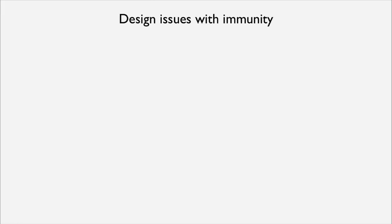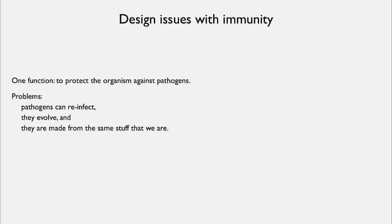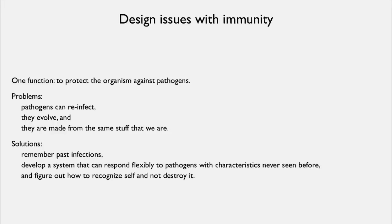The immune system evolved with certain basic design issues. One of its functions is to protect the organism against pathogens, and the problems are that pathogens can reinfect, pathogens evolve, and they're made out of the same stuff that we are. So the solution is to remember past infections, to develop a system that can respond flexibly to pathogens that have characteristics never seen before, and to figure out how to recognize self and not destroy it.